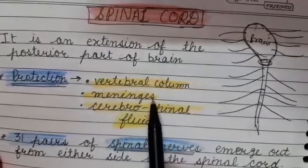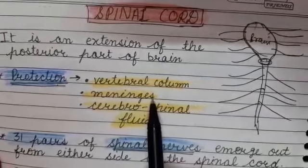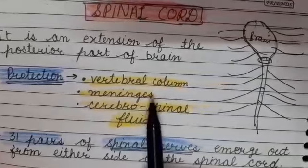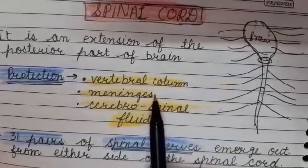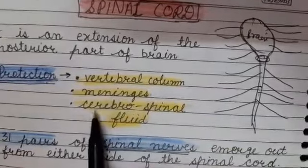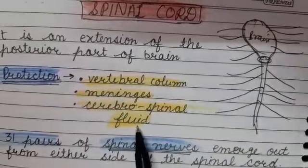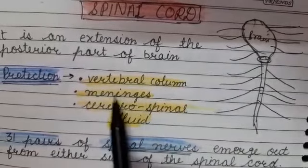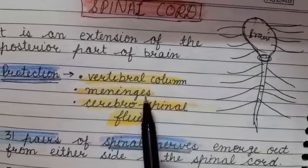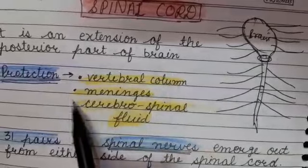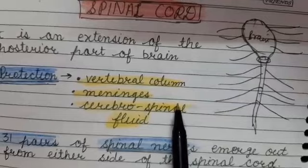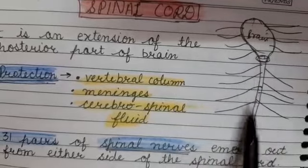Next is Meninges — three membranes in continuation with those of the brain. Then there is Cerebrospinal Fluid present in between these three membrane layers. All three things — the Vertebral Column, Meninges, and Cerebrospinal Fluid — same as with the brain, protect the Spinal Cord.